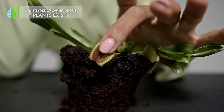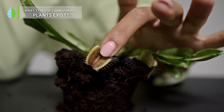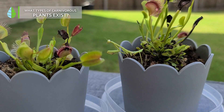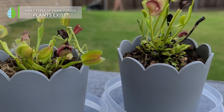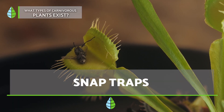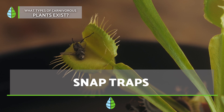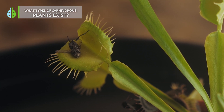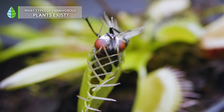Carnivorous plants have a unique way of getting their food, which mainly consists of insects. Depending on how they capture their prey, we can identify three different types. The first is snap traps — in this process the plant closes its leaves, trapping the insect inside when it touches the inner surface. It attracts insects by releasing nectar, and the